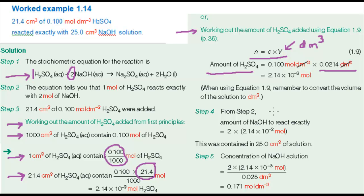In step 4, you need to look back to the information given by the equation in step 2. The number of moles of sodium hydroxide that reacted will be twice the number of moles of sulfuric acid.